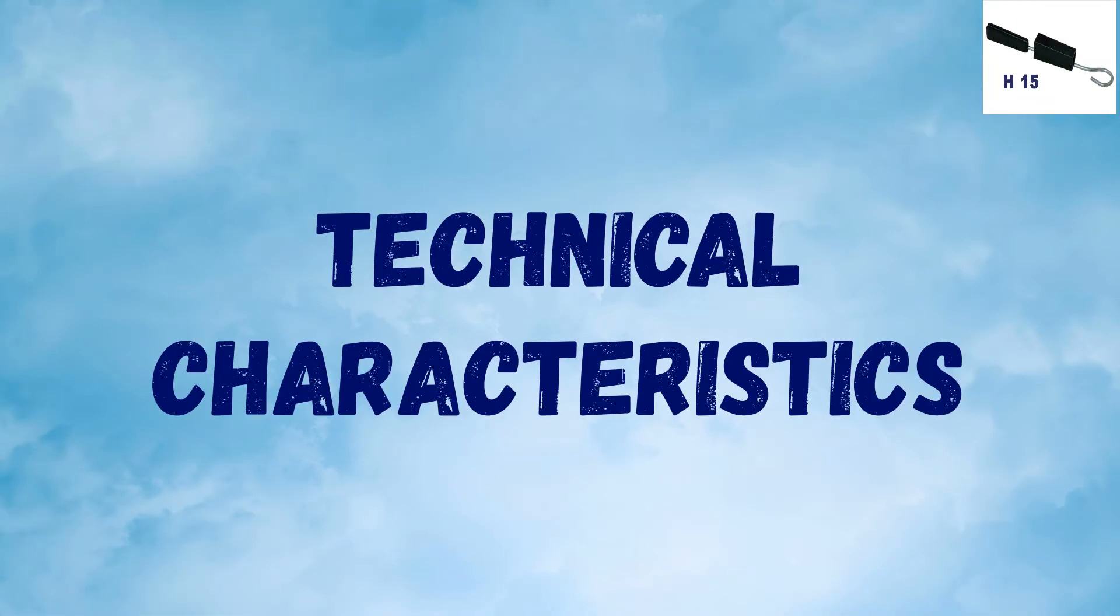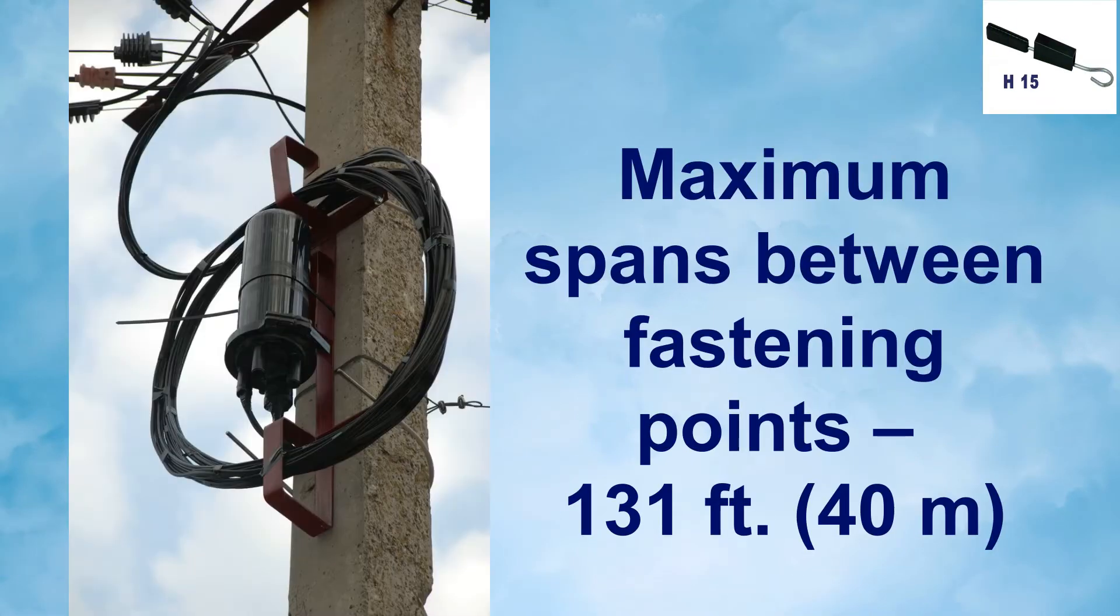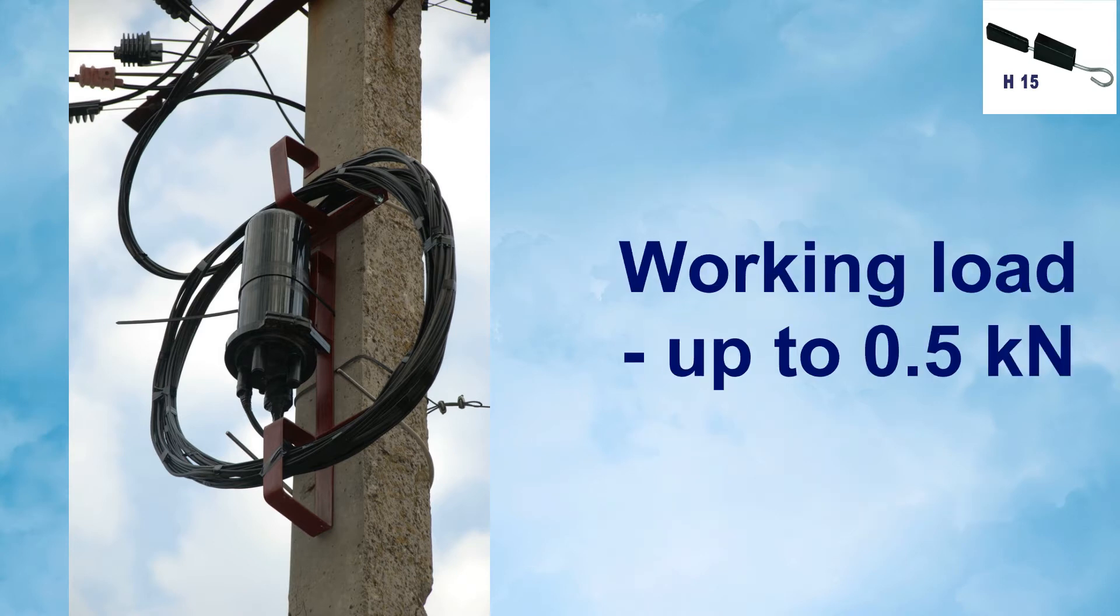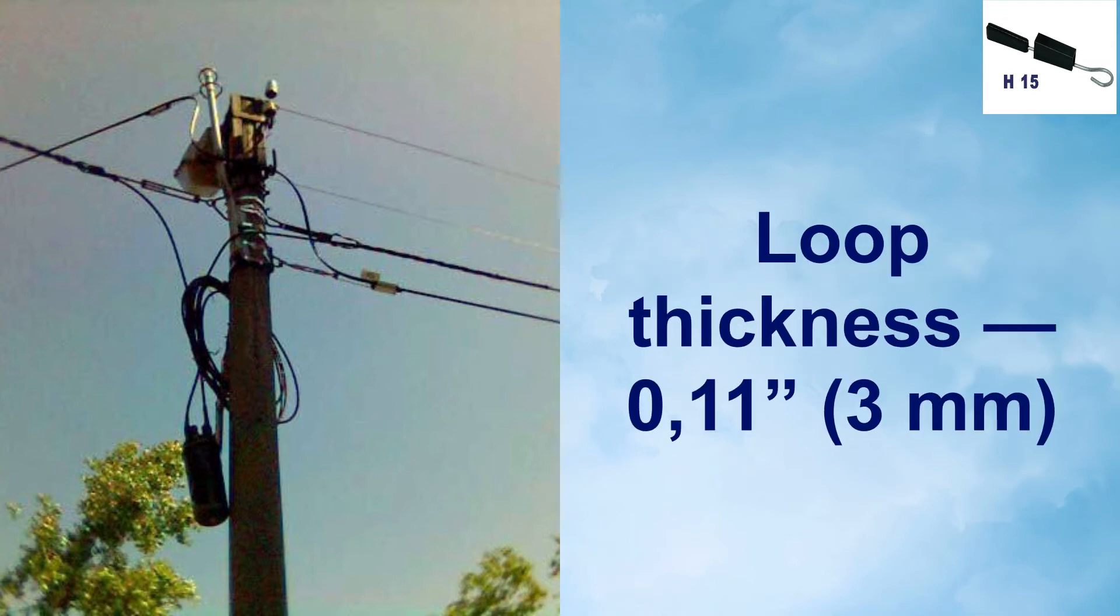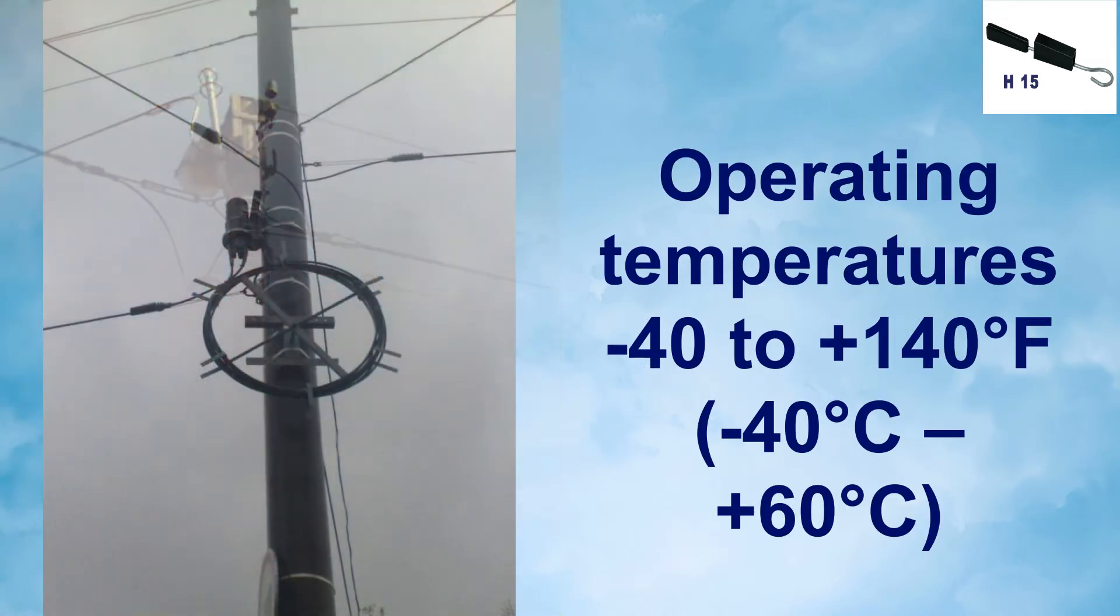Technical characteristics: Maximum spans between fastening points, 131 feet or 40 meters. Working load up to 0.5 kN. Breaking load 1.1 kN. Loop thickness 0.11 inches or 3 millimeters. Operating temperatures negative 40 to 140 degrees Fahrenheit, or negative 40 degrees Celsius to 60 degrees Celsius.